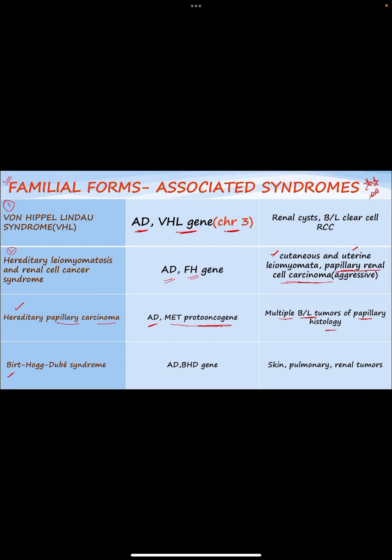Next is the Birt-Hogg-Dubé syndrome, which is autosomal dominant and associated with mutations in the BHD gene. It shows skin tumors, pulmonary cysts, and kidney tumors of various histologies. The most common kidney tumor associated with this syndrome is chromophobe cell carcinoma.